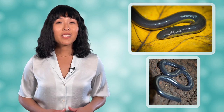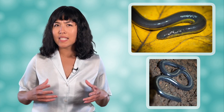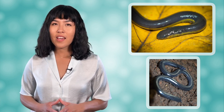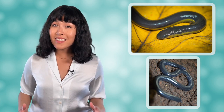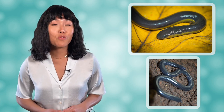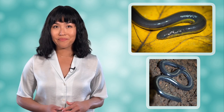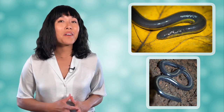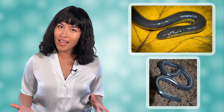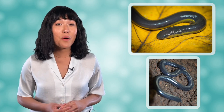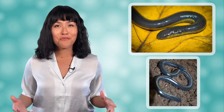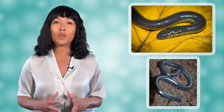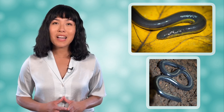At first glance, you might look at these animals and think it is a snake or an earthworm, but in fact they are caecilians, which are amphibians from the order Apoda. These unique animals are the only species in this order, and while they resemble earthworms and snakes, they have the thin, moist skin of amphibians. They lack limbs, which is where their name, meaning 'without feet,' comes from.